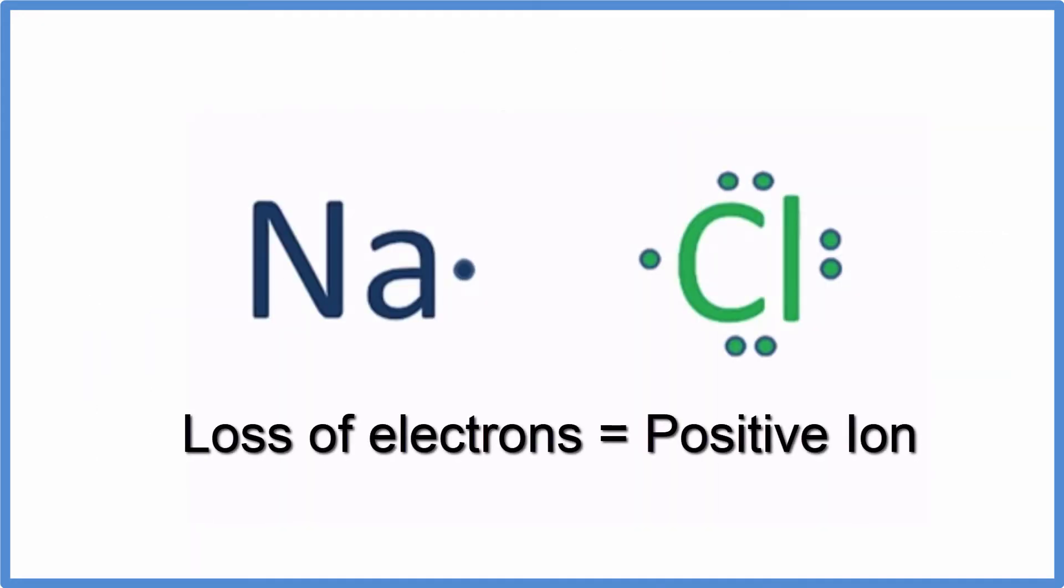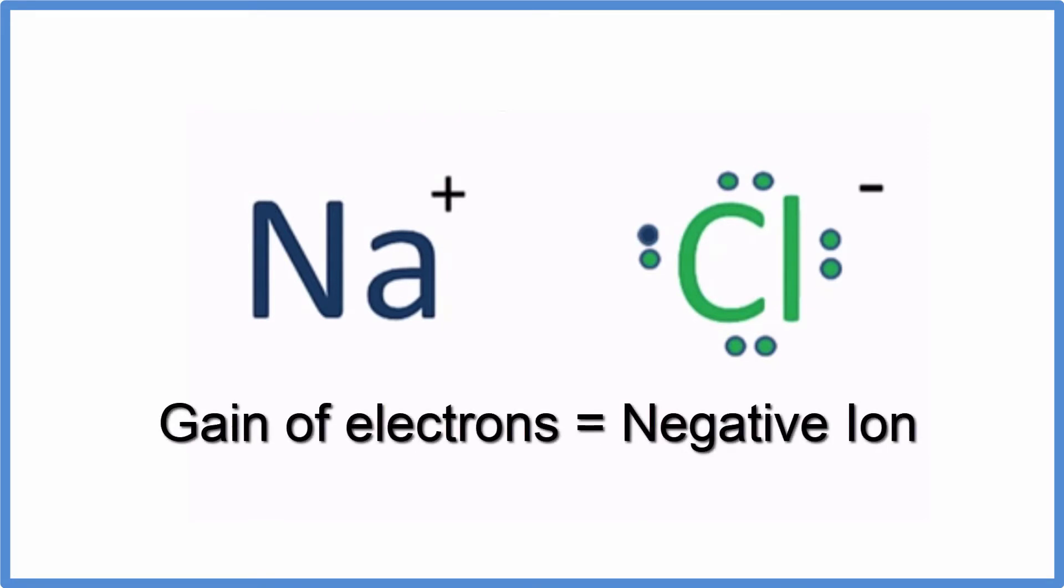It's important to understand that when an atom loses an electron, negative charge, it becomes positive. The atom that receives that electron gets the negative charge and becomes a negative ion.